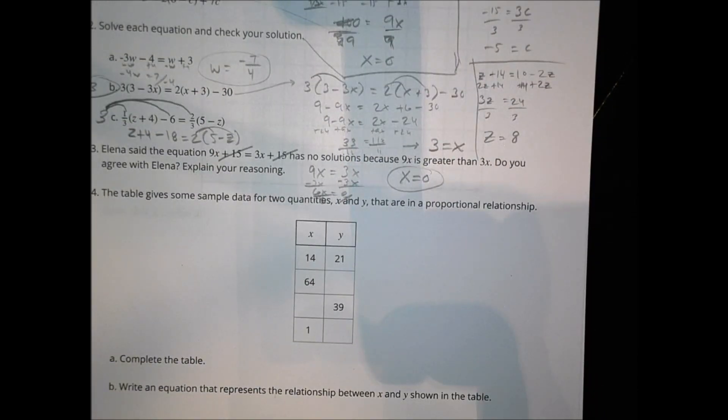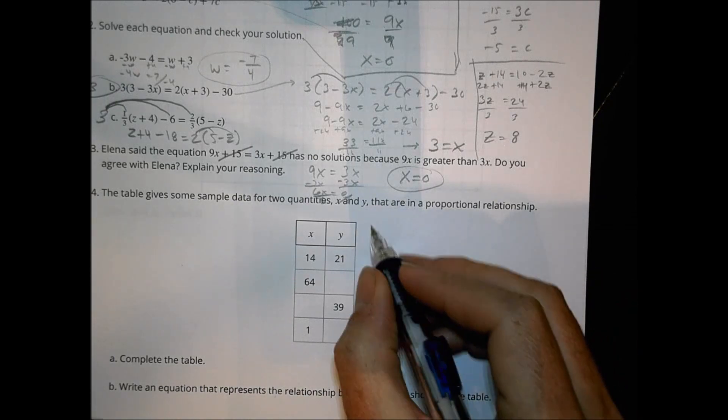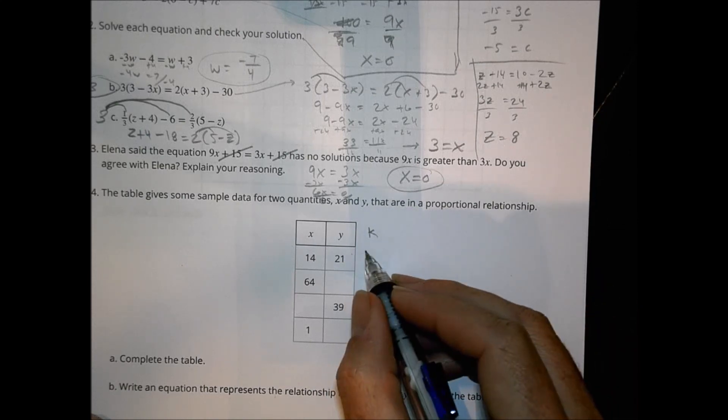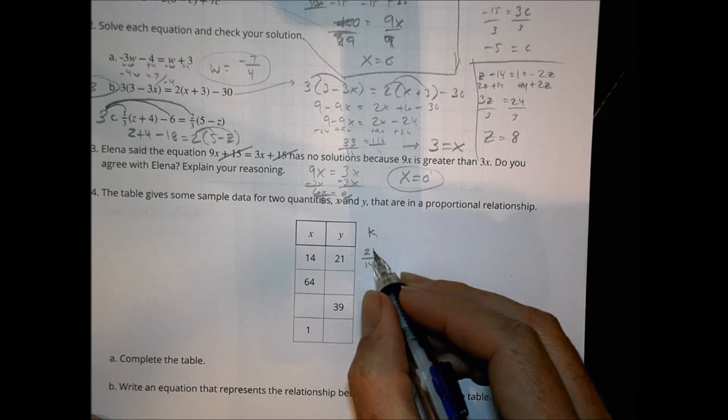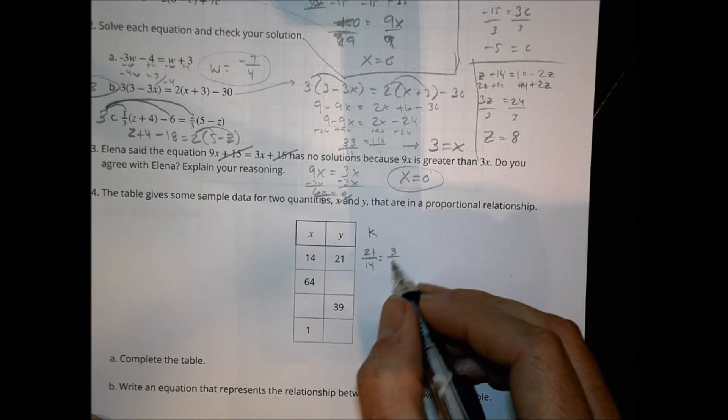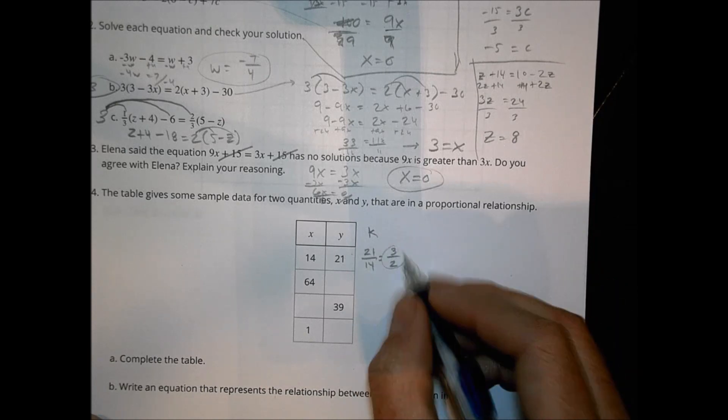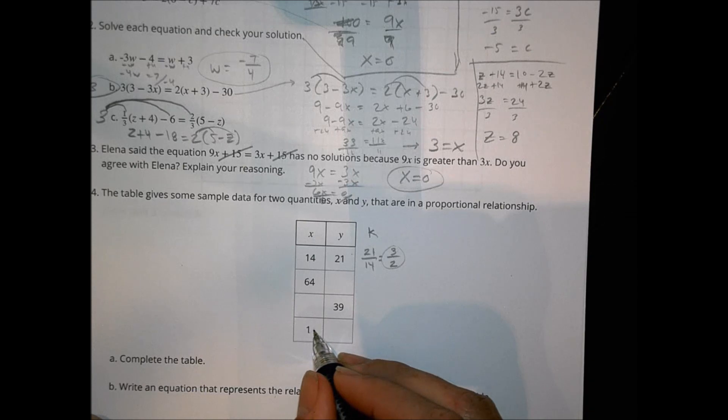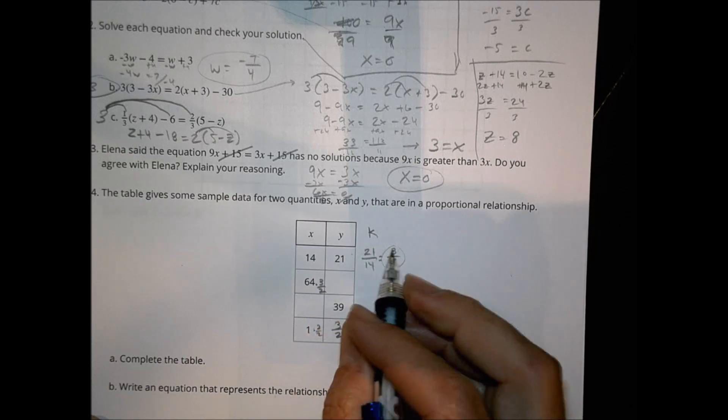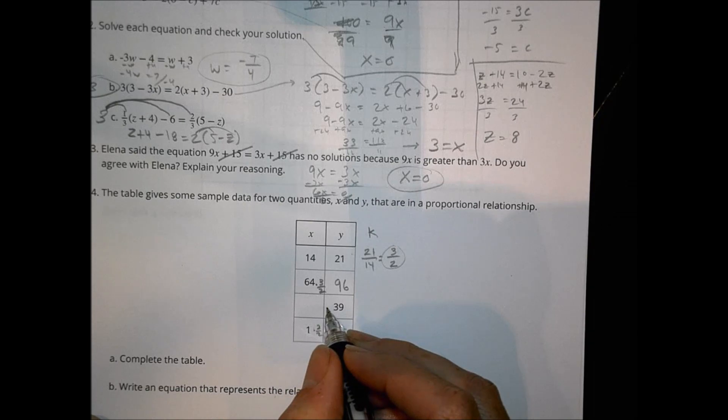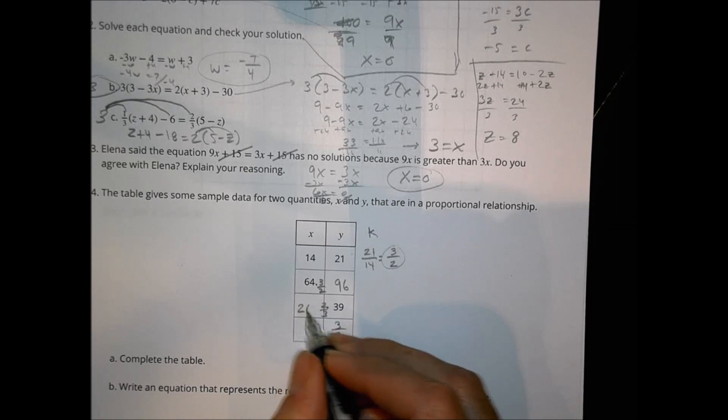For number 4, the table gets some sample data for two quantities, X and Y, that are in a proportional relationship. Complete the table and then write an equation that goes along with it there. So what I would like to do is find my K, my constant proportionality. Let's take our Y value divided by our X value, 21 divided by 14, and that reduces down, 7 goes in there 3 times, and 7 goes in there 2 times. So our K value is 3 over 2. So down on this cell, 1 times 3 over 2 would be 3 halves. So if I multiply 64 by 3 over 2, I'm going to end up with 96. And to go this way, I multiply that by the reciprocal. So 39 times 2 thirds is going to be 26.